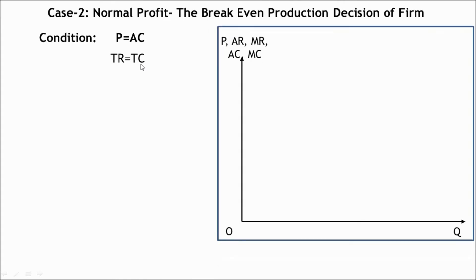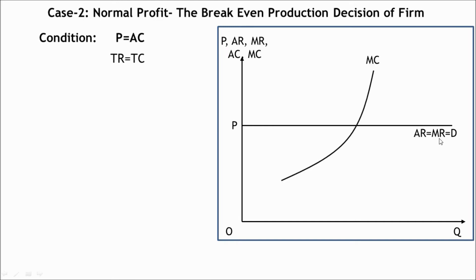Let us examine the normal profit situation of the firm using a figure. The demand curve of the price-taker firm is shown by a horizontal line, which is also the average revenue and marginal revenue curve of the firm. Here is the marginal cost curve. Equilibrium of the firm is achieved at point E, where marginal revenue equals marginal cost, and the marginal cost curve cuts the marginal revenue curve from below — that is, both the necessary and sufficient conditions for equilibrium are satisfied at point E.